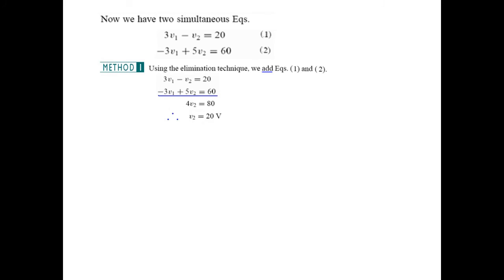These are the two equations. Using the elimination method: since one equation has 3V1 and the other has negative 3V1, we simply add them to get 4V2 equals 80, therefore V2 equals 20. Substituting V2 into Equation 1, we find V1 to be 13.33 volts. This is one technique.